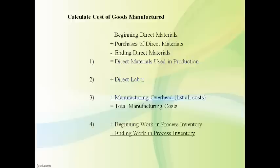Add beginning work in process because the costs in work in process were the products that were finished first. Subtract ending work in process because these costs are not finished yet. Cost of goods manufactured is the cost of goods that were finished during the period.